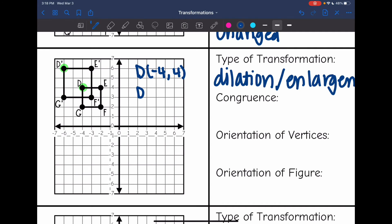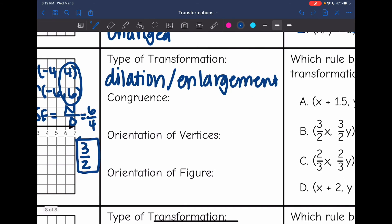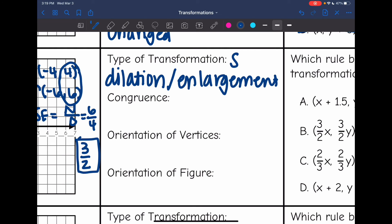And D prime was at negative 6, 6. And remember we find a scale factor by doing new over original. So I'm going to use my y values. It would be 6 over 4, which simplifies to 3 over 2. So this was a dilation and enlargement. And our scale factor was 3 over 2.